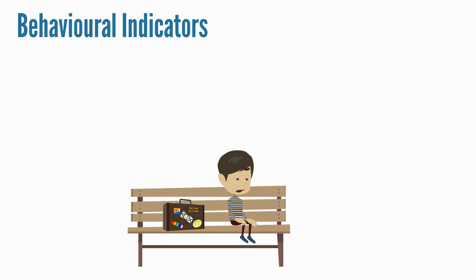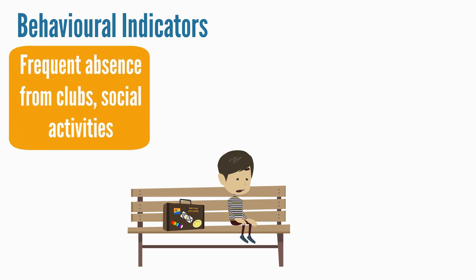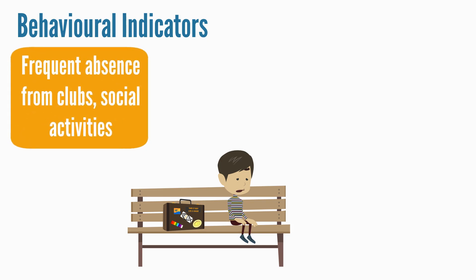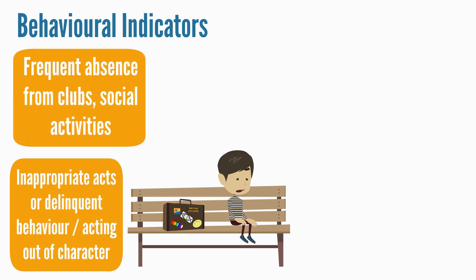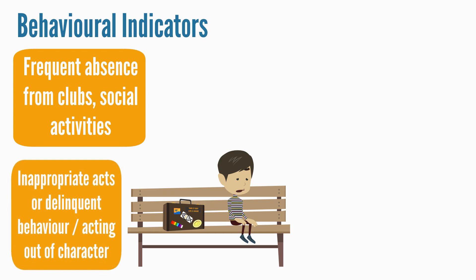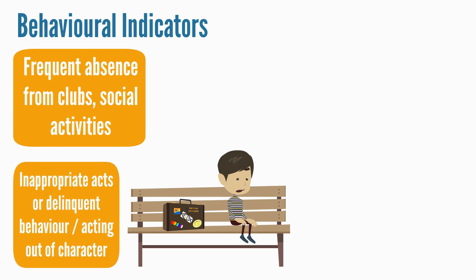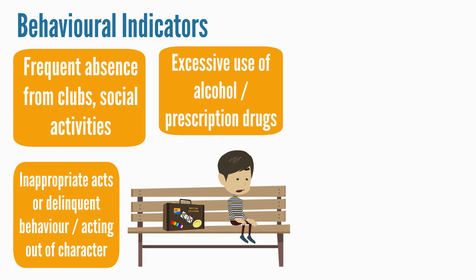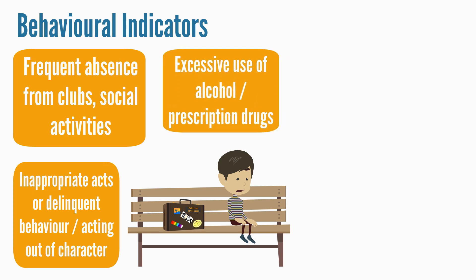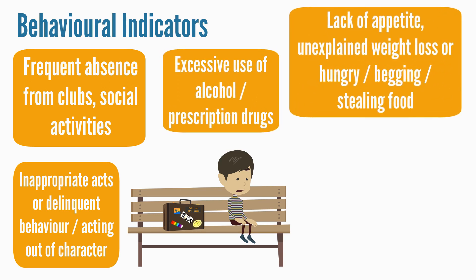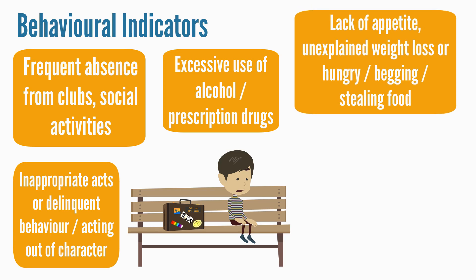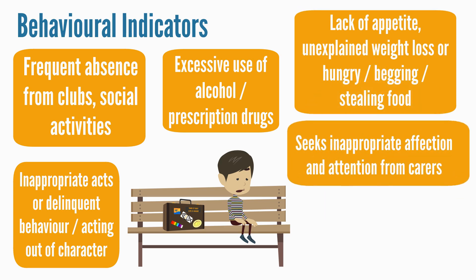Behavioural indicators can be frequent absence from clubs, social activities, inappropriate acts or delinquent behaviour, acting out of character, excessive use of alcohol, prescription drugs, lack of appetite, unexplained weight loss, or hungry, begging, or stealing food.